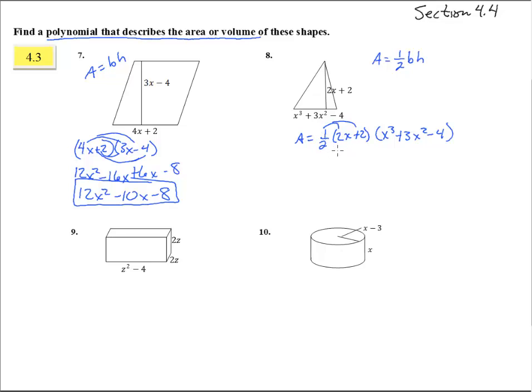Let's jump the one-half in here first, that'll be nice. One-half times 2x is just x, and that's plus 1. So it's really taking x plus 1 times x cubed plus 3x squared minus 4.